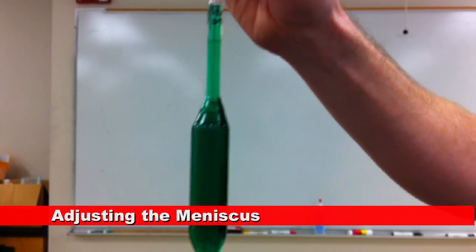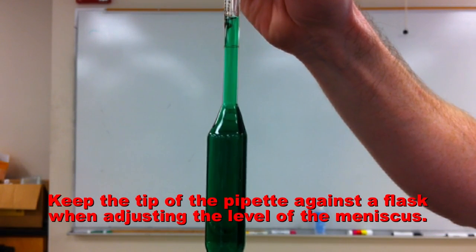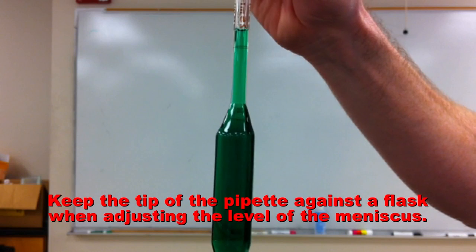Raise the pipette such that the line is at about eye level. Touch the tip of the pipette to a beaker or a flask so that you can carefully control the lowering of the solution.